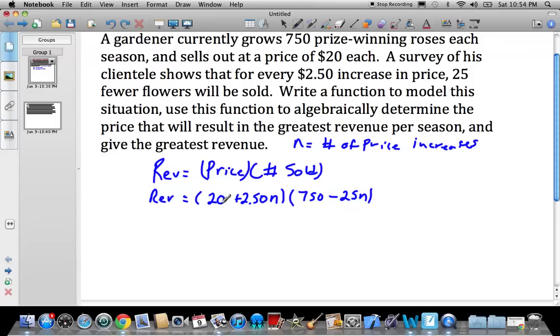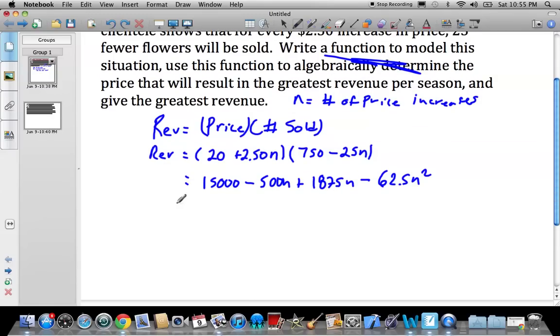So what we have here is actually a quadratic, because you're supposed to get a quadratic here. So we have to FOIL this out. 20 times 750 is 15,000, then we have minus 500n, and then that's going to be 2.5 times 750 is 1,875n, and then 2.5 times 25 is minus 62.5n squared. So hopefully I did my math right on that. So now what I have to do is just reduce this down in such a way that we have it in general form. All we've got to do really is reduce this inner pair here, so 15,000 plus 1,375n minus 62.5n squared. So here's my revenue equation.